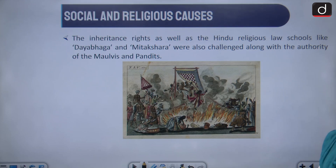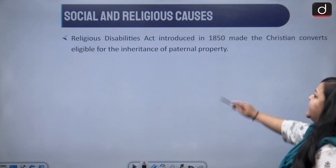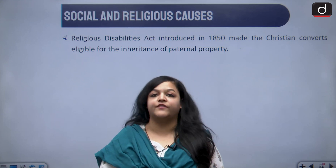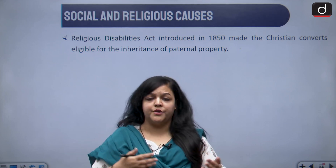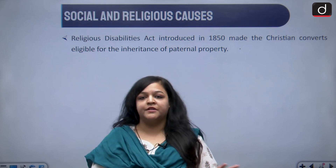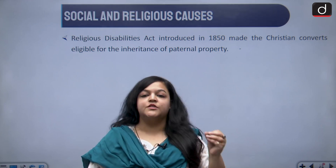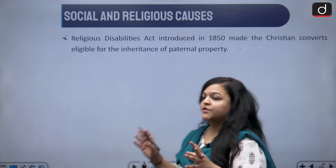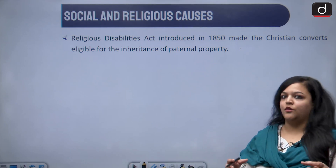Inheritance rights and Hindu religious law schools such as Dayabhaga and Mitakshara were also challenged. The authorities of pundits and maulvis were undermined as well. Most importantly, the Religious Disabilities Act of 1850 gave anyone who converted the legal right to claim their paternal property, removing the ability of families to disown converts — which had a very major impact on families.